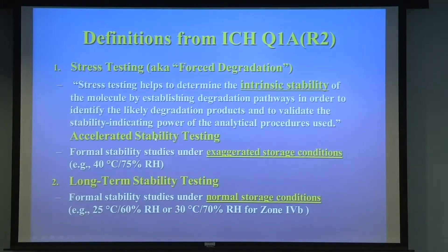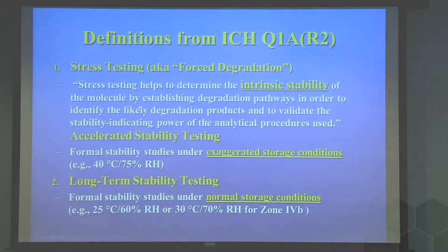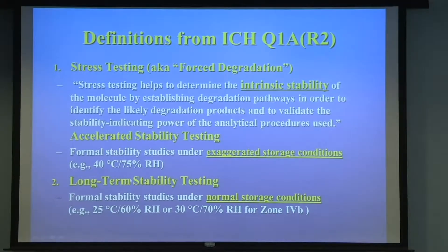Accelerated stability testing is more formally defined by ICH — that's part of the formal study. That's 40/75 or 15 degrees C above your long-term storage condition. It's supposed to be an exaggerated storage condition and give you some idea of what will really happen. Accelerated stability and long-term stability are really part of formal stability studies, whereas stress testing is an investigation.